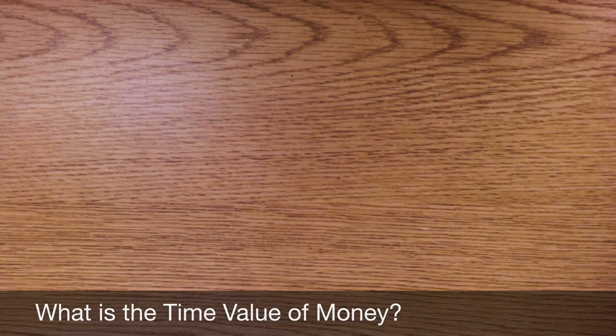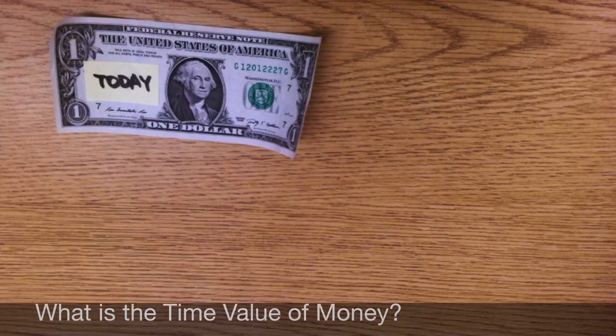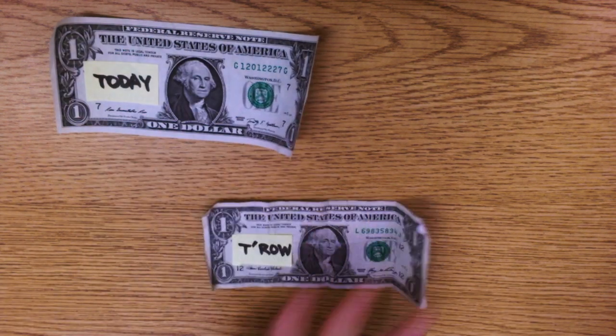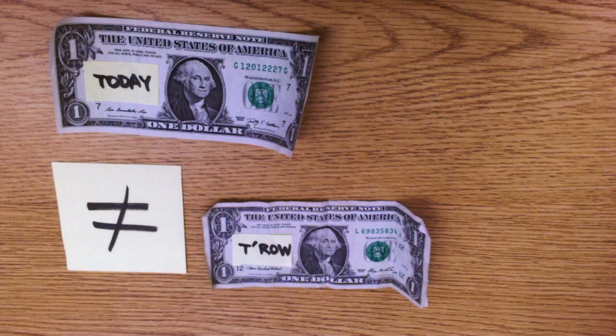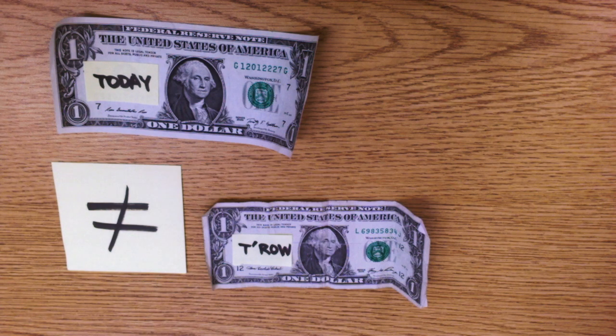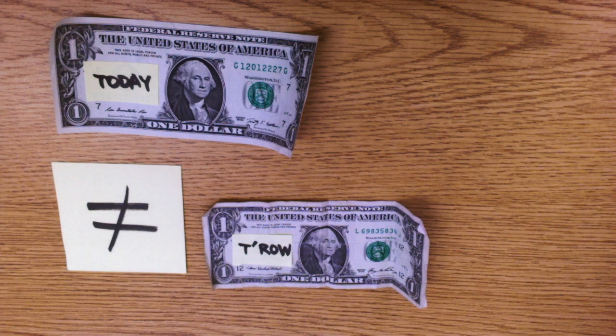What is the time value of money? It means that a dollar today is worth differently from a dollar tomorrow. So you can buy some stuff with the dollar today, but in the future you won't be able to buy that same stuff using tomorrow's dollar. And surprisingly this is not because of inflation. Even without inflation the dollar value will change from today to tomorrow because of interest.